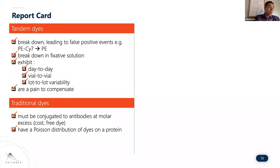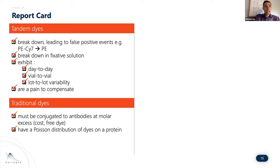So this is my tandem dye report card. Tandem dyes break down, leading to false positive events. They break down in fixative solution. They exhibit day-to-day, vial-to-vial, and lot-to-lot variability. They're a pain to compensate. Traditional dyes must be conjugated to antibodies at molar excess, which drives cost and can lead to the presence of free dye in solution. And they have a Poisson distribution of dyes on a protein.